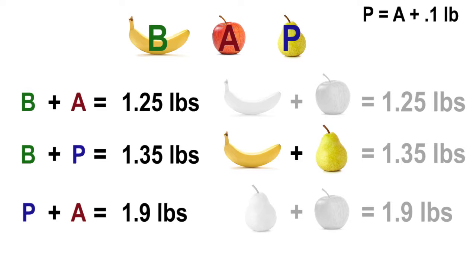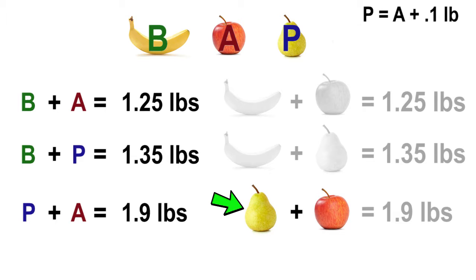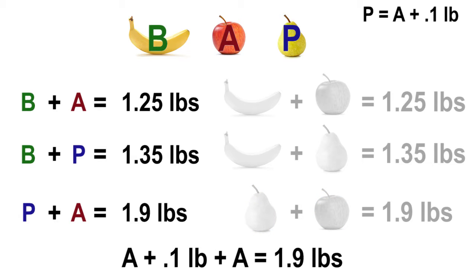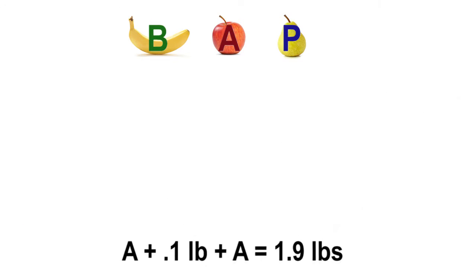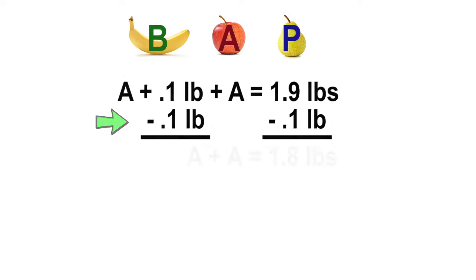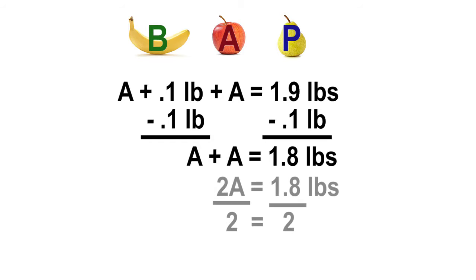So in the equations, each time p, or a pear, is written, it can be substituted as a plus one-tenth of a pound. Let's look at the last equation: the pear plus an apple equals 1 and 9 tenths pounds. The pear was substituted with an apple plus one-tenth of a pound, so the equation reads a plus one-tenth of a pound plus a equals 1 and 9 tenths of a pound. In order to find out the weight of the apple, the one-tenth of a pound will be subtracted from both sides of the equation. The equation now reads a plus a equals 1 and 8 tenths pounds. Two apples are equal to 1 and 8 tenths pounds, so one apple would be 1 and 8 tenths pounds divided by 2. One apple is 9 tenths of a pound.